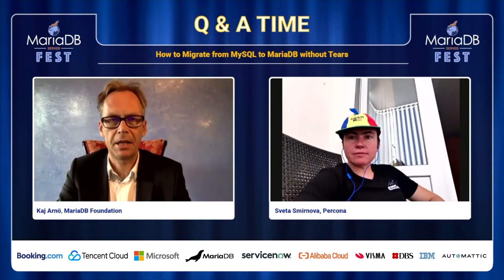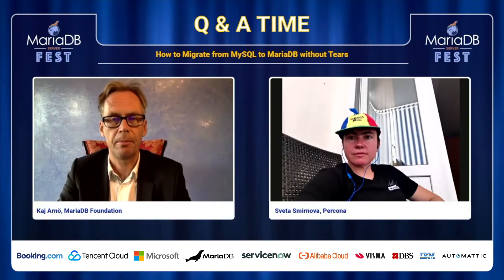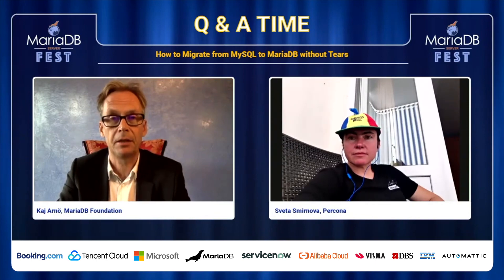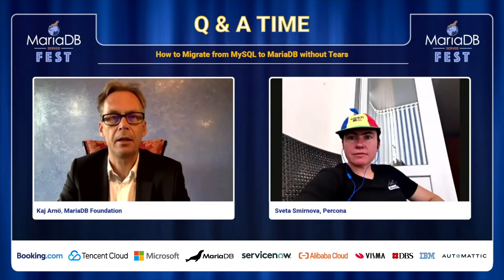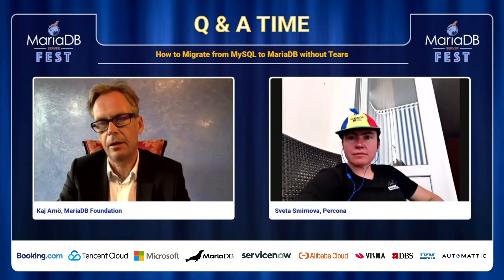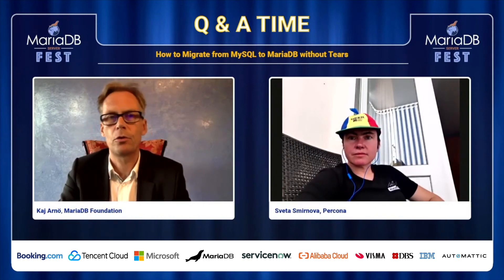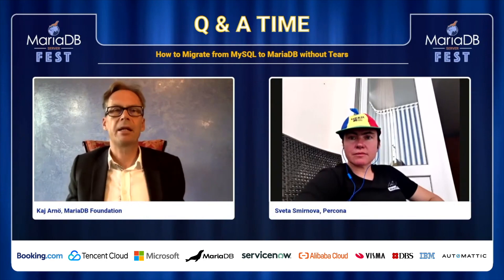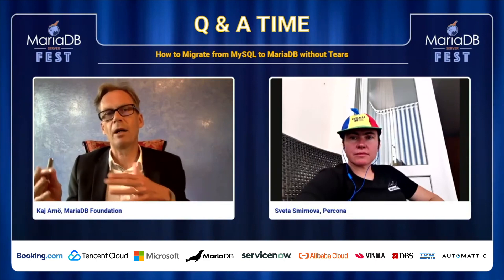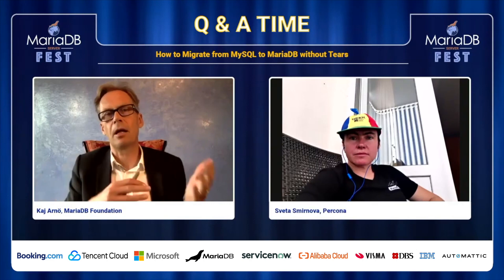So GTIDs — global transaction identifiers — that seems to be the most contested topic. Your view was that it's unfortunate they are different and it causes a bit of headache, but they are more human-readable in MariaDB. Usually drop-in replacement means you can start a new version of MariaDB without changing anything — just shut down the previous version and start the new one. There's a frequent comparison about the size of an upgrade from one MariaDB version to another, or one MySQL version to another, comparing that with changing from MySQL to MariaDB. Do you think that is a fair comparison — is it the same magnitude?